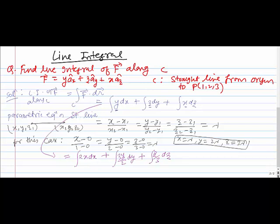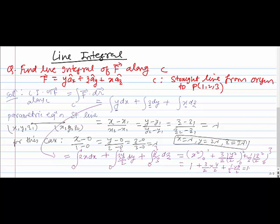Now we can simply put the limits: x from 0 to 1, y from 0 to 2, z from 0 to 3. This gives [x²] from 0 to 1 + (3/2)[y²/2] from 0 to 2 + (1/3)[z²/2] from 0 to 3 = 1 + (3/2)(4/2) + (1/3)(9/2) = 1 + 3 + 3/2 = 4 + 3/2 = 11/2. That is the correct answer.